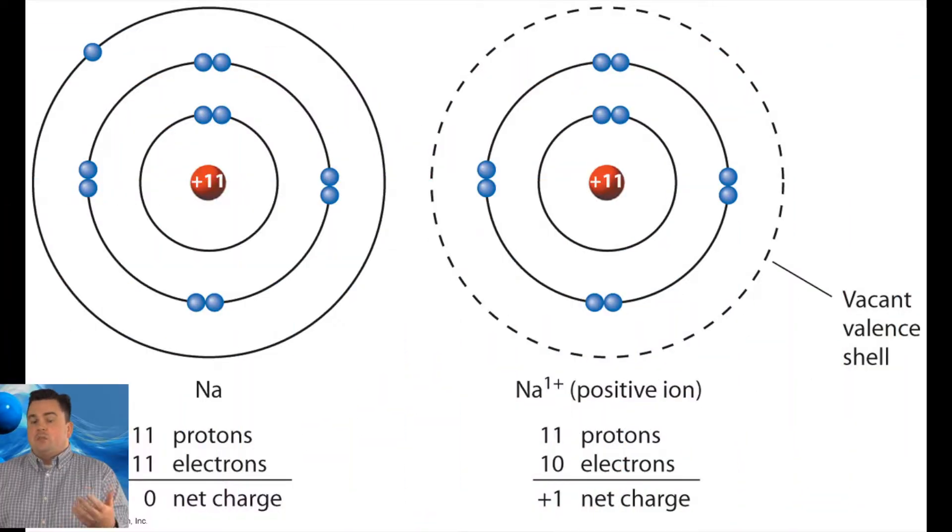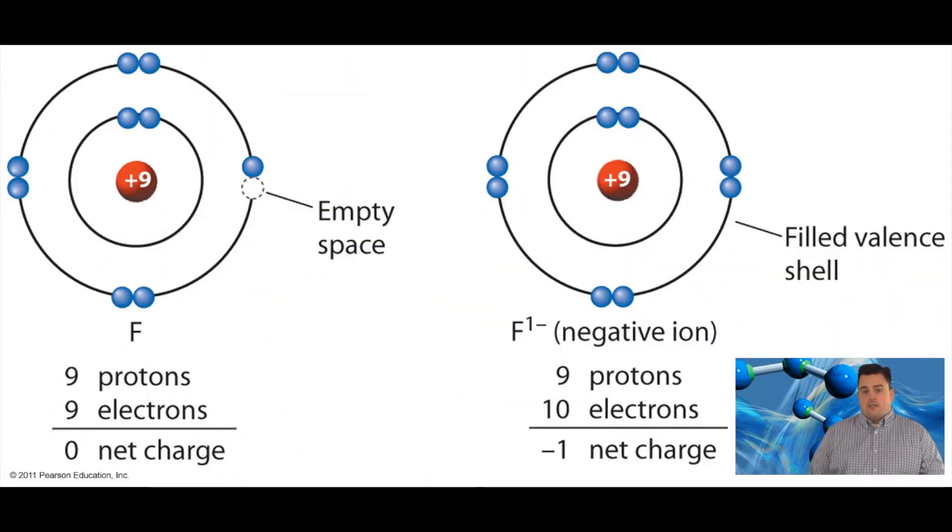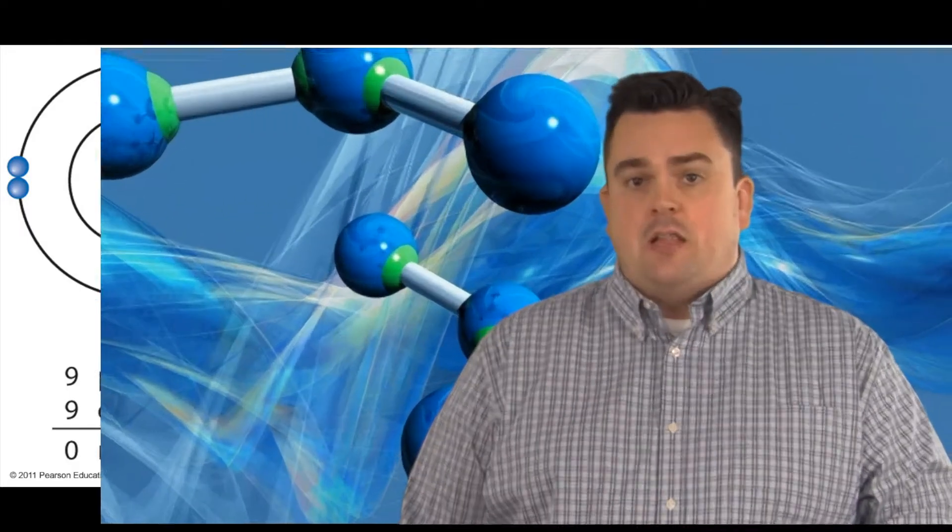So metals, which tend to have a very low number of valence electrons, it's very easy for them to lose those electrons, to lose that shell and achieve that stable octet by using the shell just below. Non-metals, which have a higher number of valence electrons, they tend to gain electrons to achieve that stable octet. For example, sodium being a metal has one valence electron. It's very easy to just lose that one valence electron and have that full stable octet right there below. Fluorine, for example, has seven valence electrons. So it's very easy for fluorine to gain that one electron to achieve its stable octet.